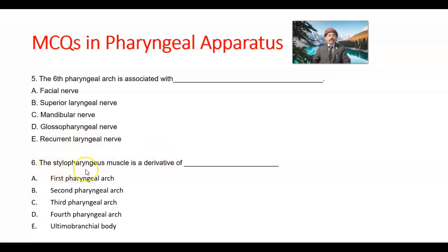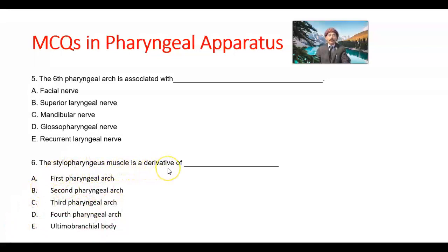Question number 6. The stylopharyngeal muscle is a derivative of which arch? Options: first arch, second pharyngeal arch, third pharyngeal arch, fourth pharyngeal arch, or ultimobranchial body (the fifth pharyngeal arch, incorporated into the fourth arch and fourth pouch). The answer is C, third pharyngeal arch.